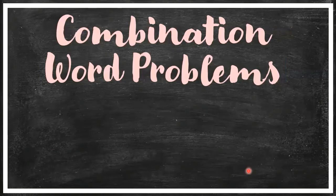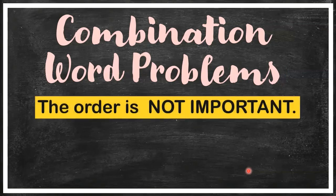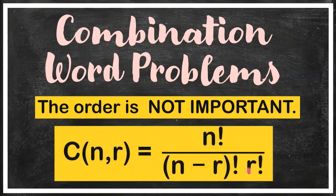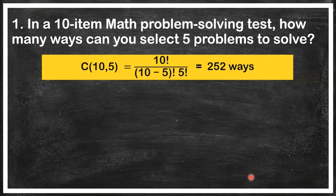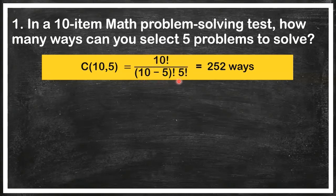Now let me give you some combination word problems. In a combination, the order is not important — remember the combination formula. First problem: you have a 10-item math problem-solving test and you're going to select five problems. It's a combination because it doesn't matter which five problems you choose, just that you choose five. Using the combination formula where N = 10 and R = 5, you get 252 ways.